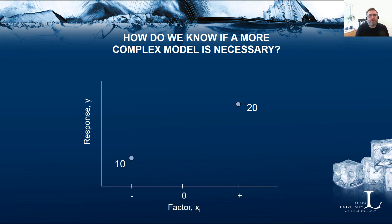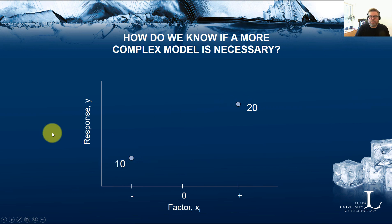Part of the RSM approach is knowing when a more complex model is necessary. The typical way to acquire this knowledge — if we need a model more complex than a first order model or a first order model with interactions — is to use center points. In this simple example, we have one response and one factor with low and high levels. Suppose we run experiments at the low and high levels with response values of 10 and 20. The best prediction we can make for the center point, assuming a linear relationship, is the average of those values.